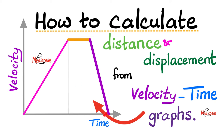In previous videos, we talked about how to read physics graphs, the meaning of the slope, and how to calculate the slope. We talked about scalars versus vectors, distance versus displacement, speed versus velocity. We talked about acceleration and many equations of kinematics. Today, you will learn how to read velocity-time graphs and how to use them to find out the total distance as well as the net displacement.